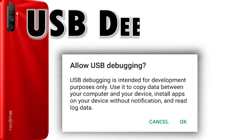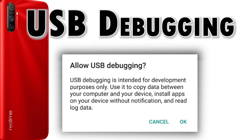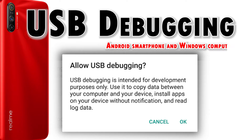USB debugging is typically used by software developers or IT support people to connect an Android device to a computer and carry out data transfer between devices via USB connection. By default, the USB debugging feature is lined up among other hidden Android commands under developer mode. To access these hidden features, you will need to unlock the phone's developer options.